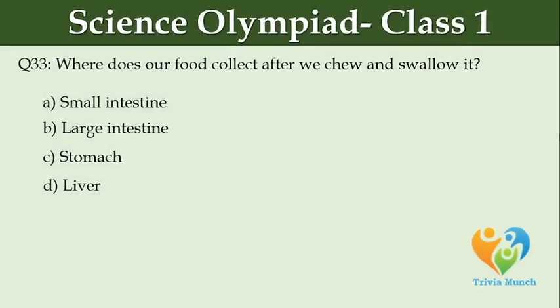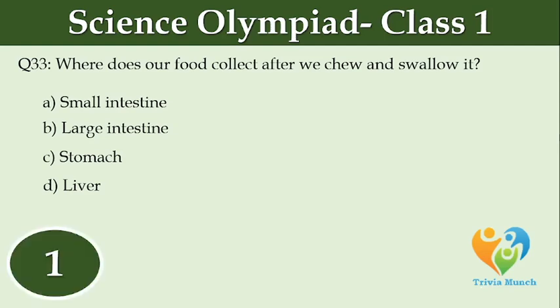What does our food collect in after we chew and swallow it? Option A: Small intestine. Option B: Large intestine. Option C: Stomach. Option D: Liver.